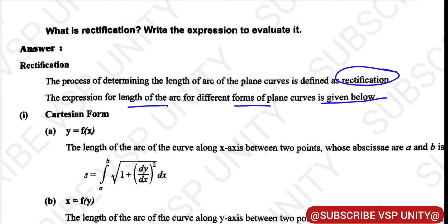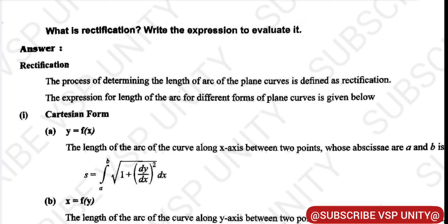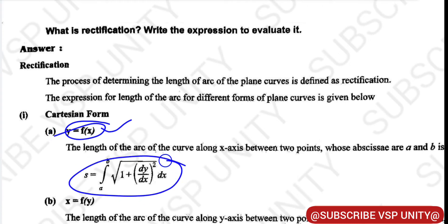Rectification is used to find the length of a plane curve. We need to find different types of lengths using different formulas depending on the form of the equation. If the given question is in Cartesian form — that is, if the given question is like y is equal to f of x — how do we find the length of this curve using the formula?